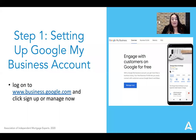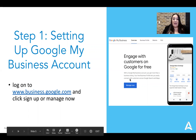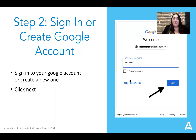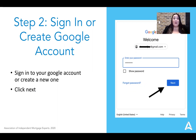So step number one — the easiest step — is setting up your Google My Business account. Just go to business.google.com and click the Manage Now button. Number two, sign in to your Google account. If you have a business account, I would recommend signing in with that if it's associated with your business. If not, you can always create an account here too.